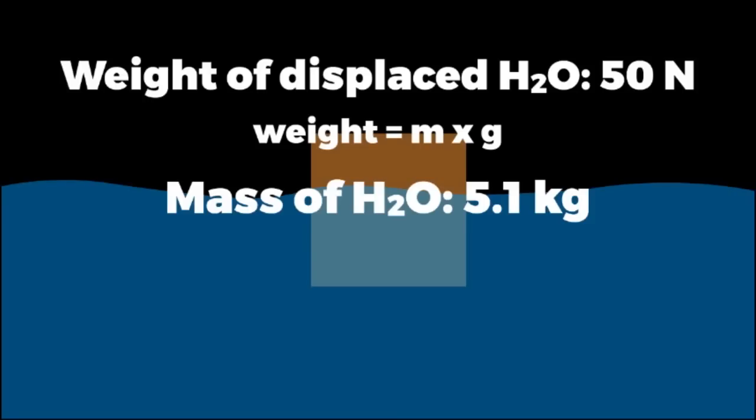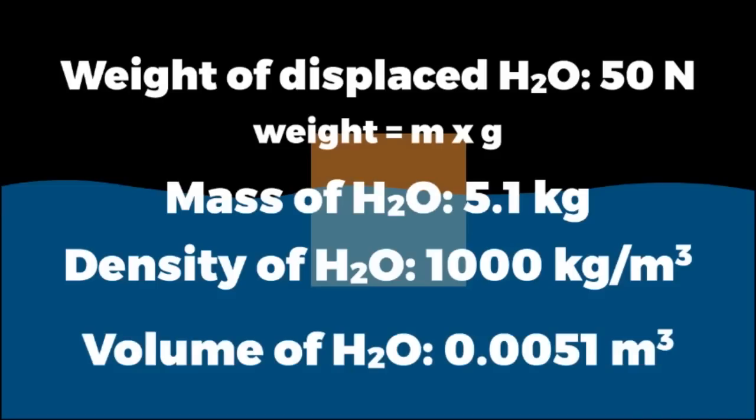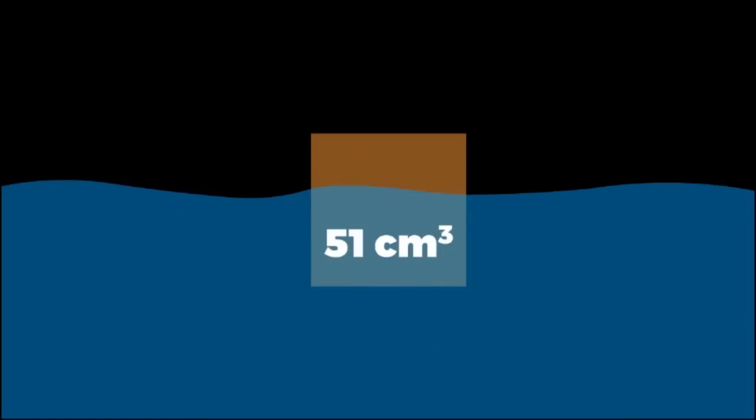And since we know the density of water, 1,000 kilograms per meter cubed, we can find the volume of displaced water simply by dividing mass by density. That will give us 0.0051 cubic meters, which is the same as 51 cubic centimeters. Therefore, we absolutely know that there is 51 cubic centimeters of the object that are underwater.